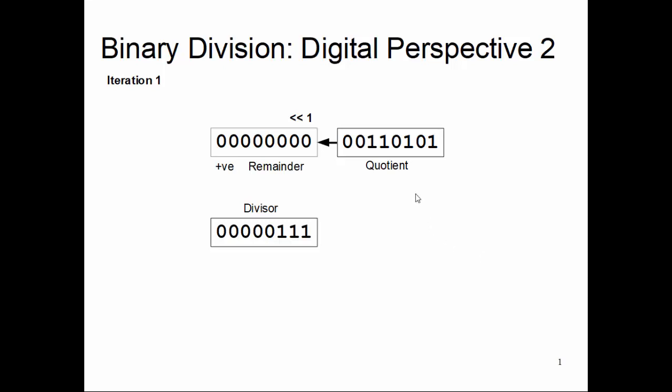Now first step, iteration: we right shift. Right shift by default will introduce a zero into the LSB position in the quotient. Then we do a subtraction from the remainder with the divisor. If the remainder is negative, roll back, which is again like add back the divisor and finalize my quotient bit.